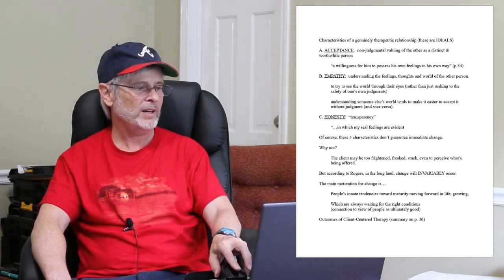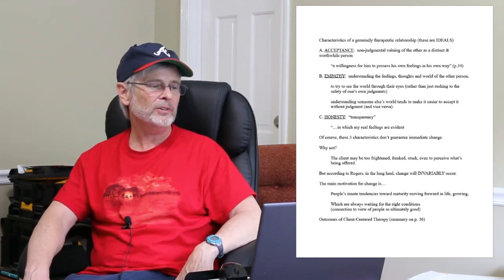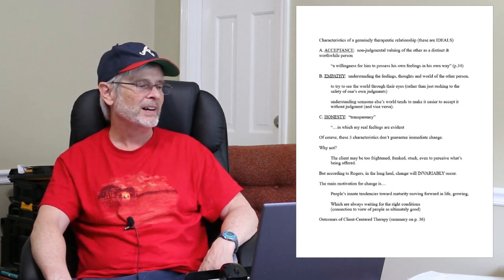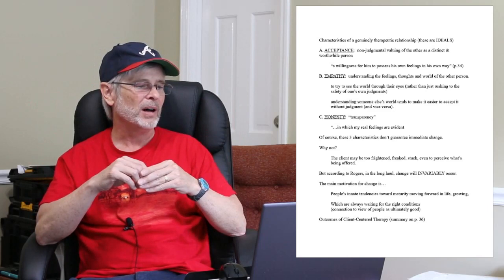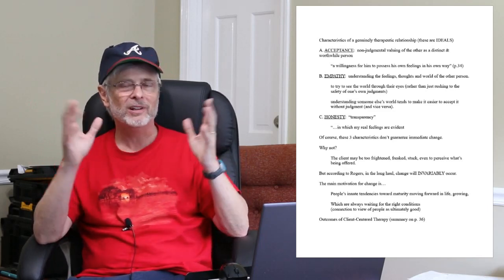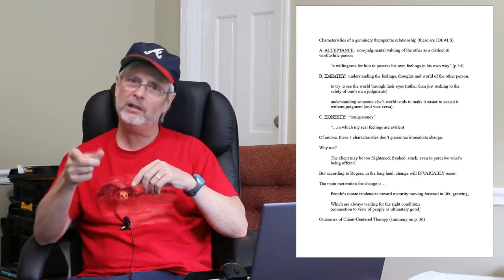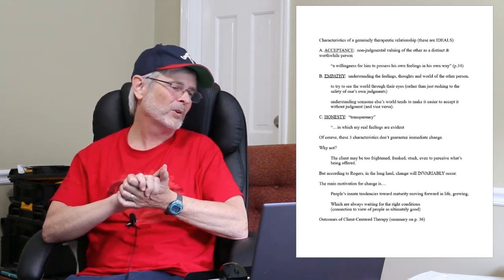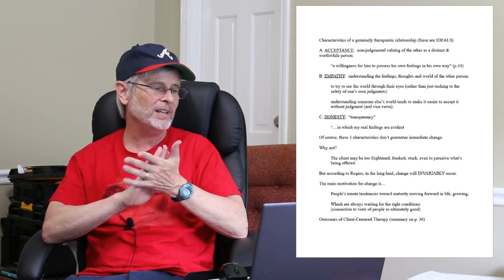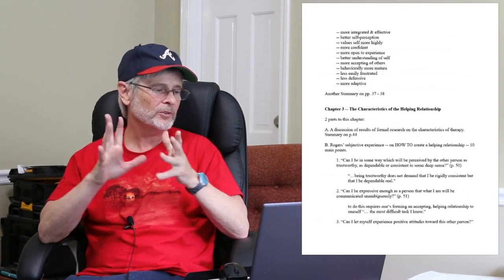We're starting to head toward the straightaway to the finish line of chapter two. I told you we were going to start going through these a little bit faster. On page 36 of On Becoming a Person, he lists a bunch of outcomes, like concrete outcomes that he's found by way of researching how good client-centered therapy, also known as person-centered therapy, is. And because I care about you, the tuition-paying West Georgia student, I've summarized those in an easy-to-understand, easy-to-study list, but I'm taking them from page 36.